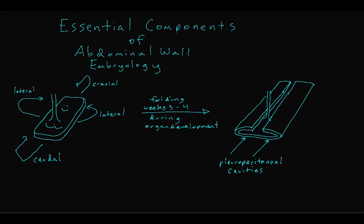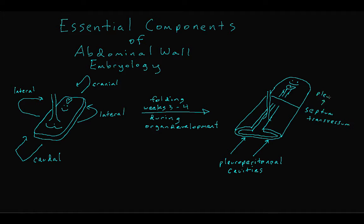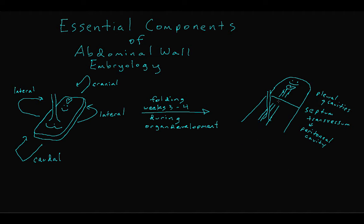The cephalic fold, which actually contains the developing heart, migrates anteriorly and caudally. In this fashion, the heart is delivered from the head region to the chest region. The cephalic fold also gives rise to the septum transversum, the precursor to the diaphragm, formerly dividing the pleural cavities and the peritoneal cavity. The caudal fold, which contains the developing bladder, migrates anteriorly and cephalically to deliver the bladder to its normal position superior to the anus.